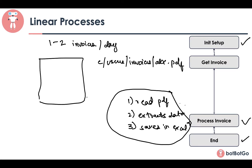In such cases, instead of running the bot 100 times, it makes sense to do it in an iterative way and pass all the invoices at one go. This brings us to the next process type, which is the Iterative Process.